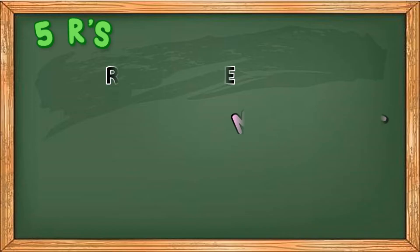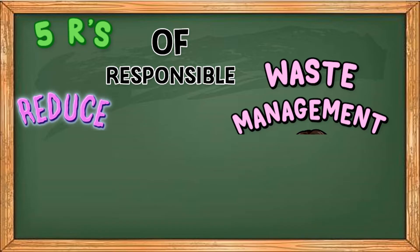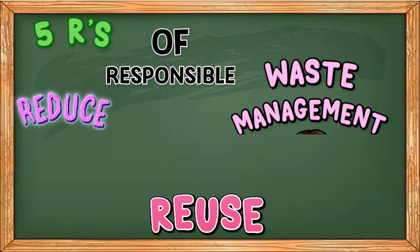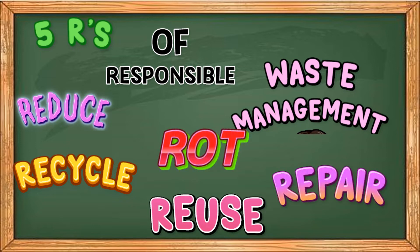Some changes in the materials are harmful to the environment. They may pollute land, water, and air. To keep our surroundings clean and to prevent or minimize pollution in our environment, people are encouraged to do the 5 Rs of responsible waste management. These are: reduce, reuse, recycle, repair, and rot.